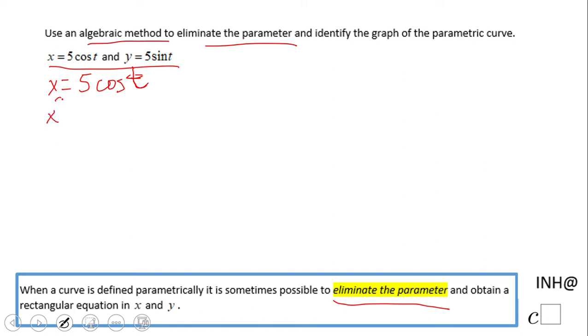First of all, I want you to square x. So we're going to have 5 cosine of t, quantity squared, which is going to be what? 25 cosine squared t.